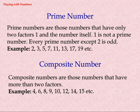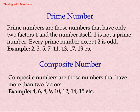Prime numbers are those numbers that have only 2 factors: 1 and the number itself. 1 is not a prime number. Every prime number except 2 is odd. Examples: 2, 3, 5, 7, 11, 13, 17, 19, etc.